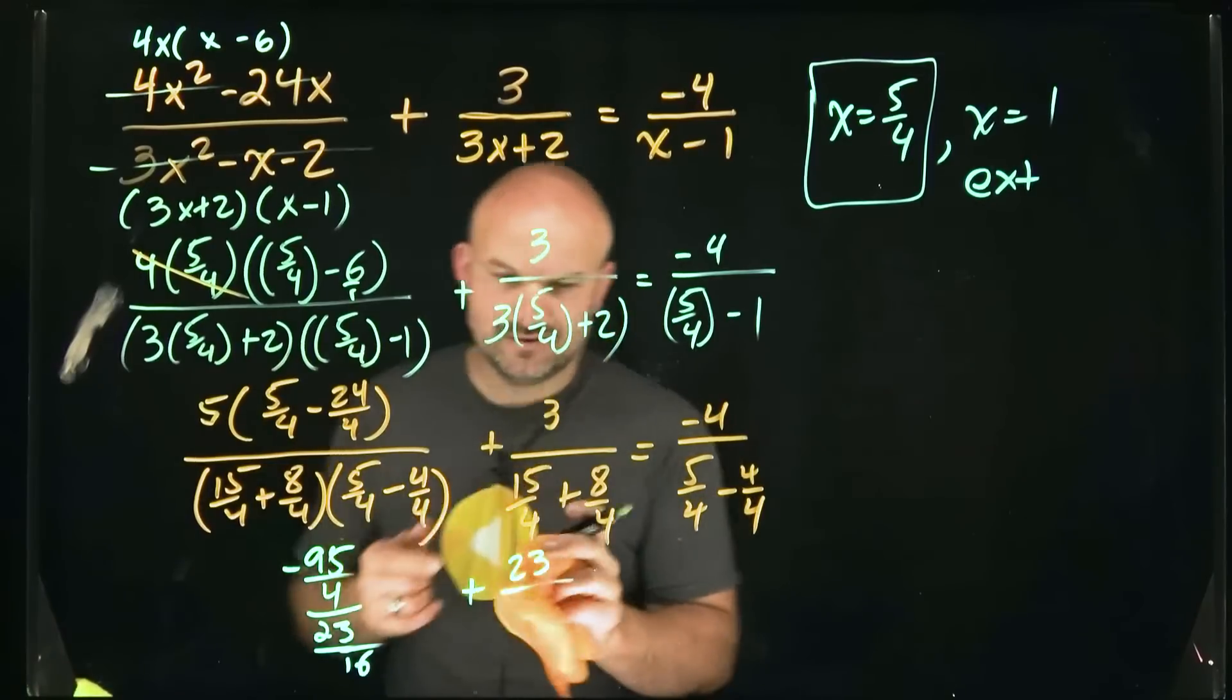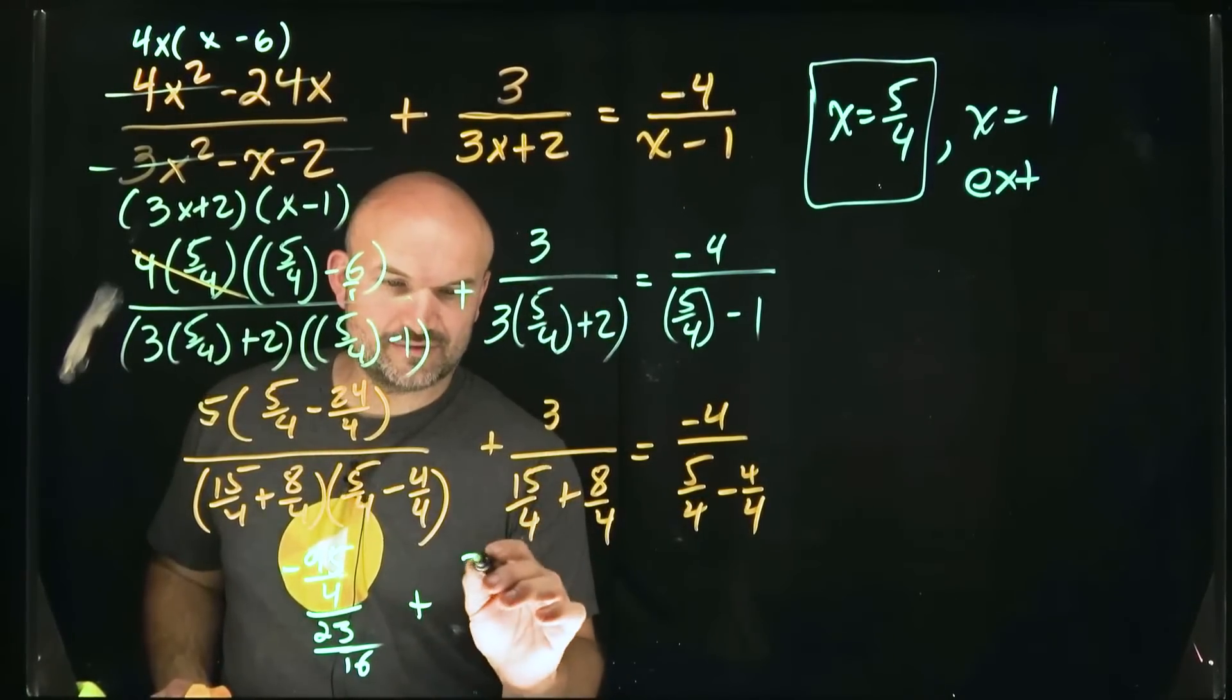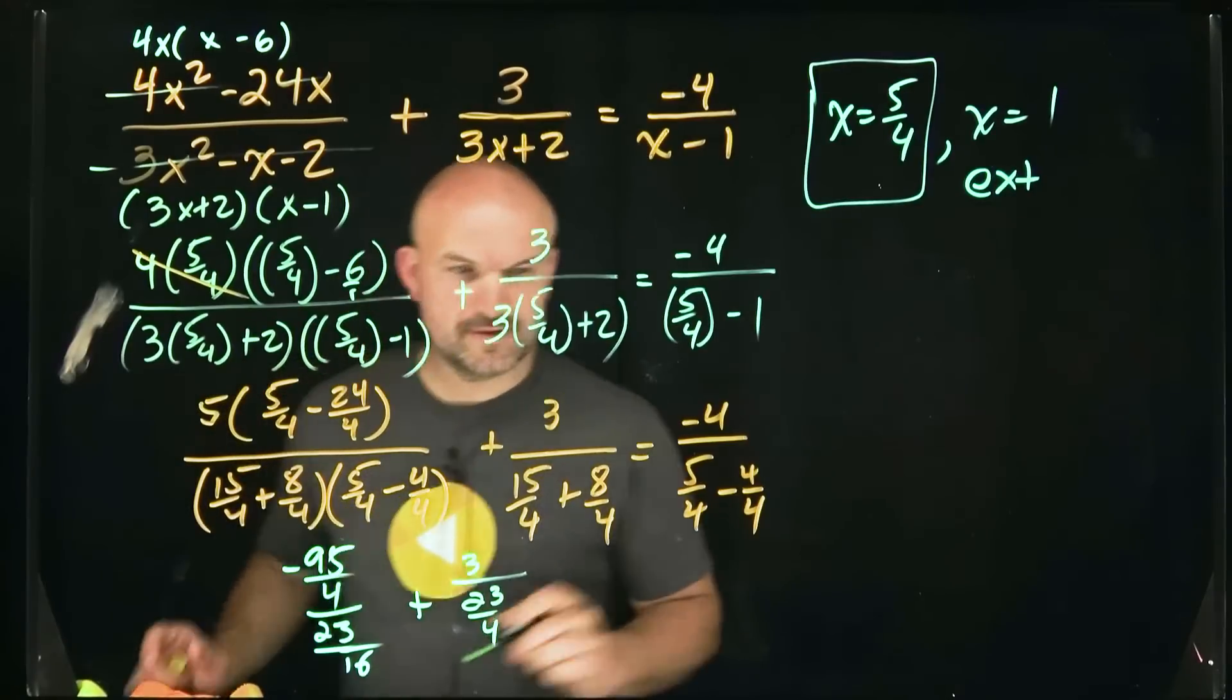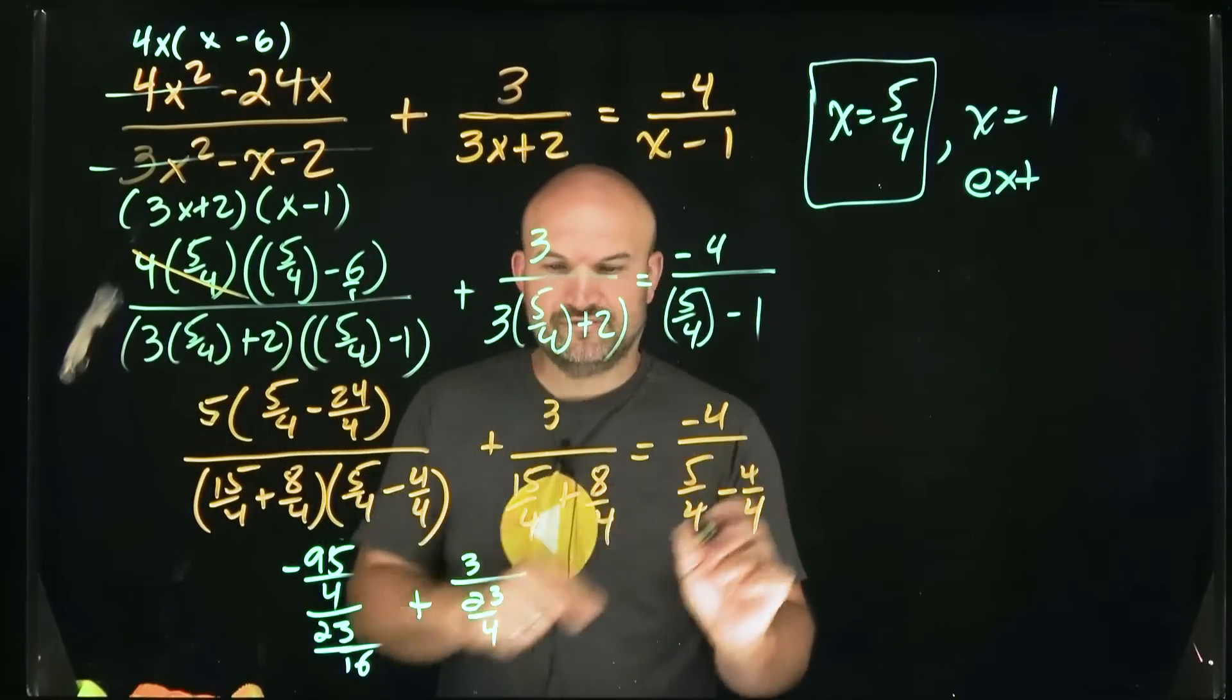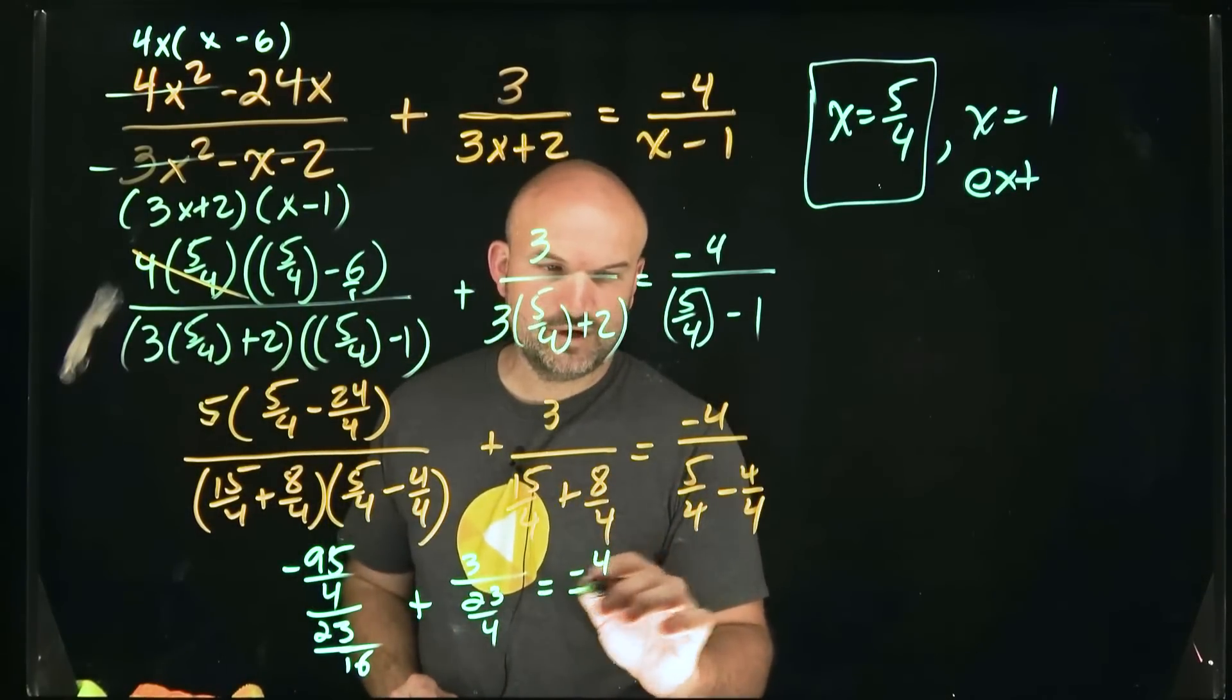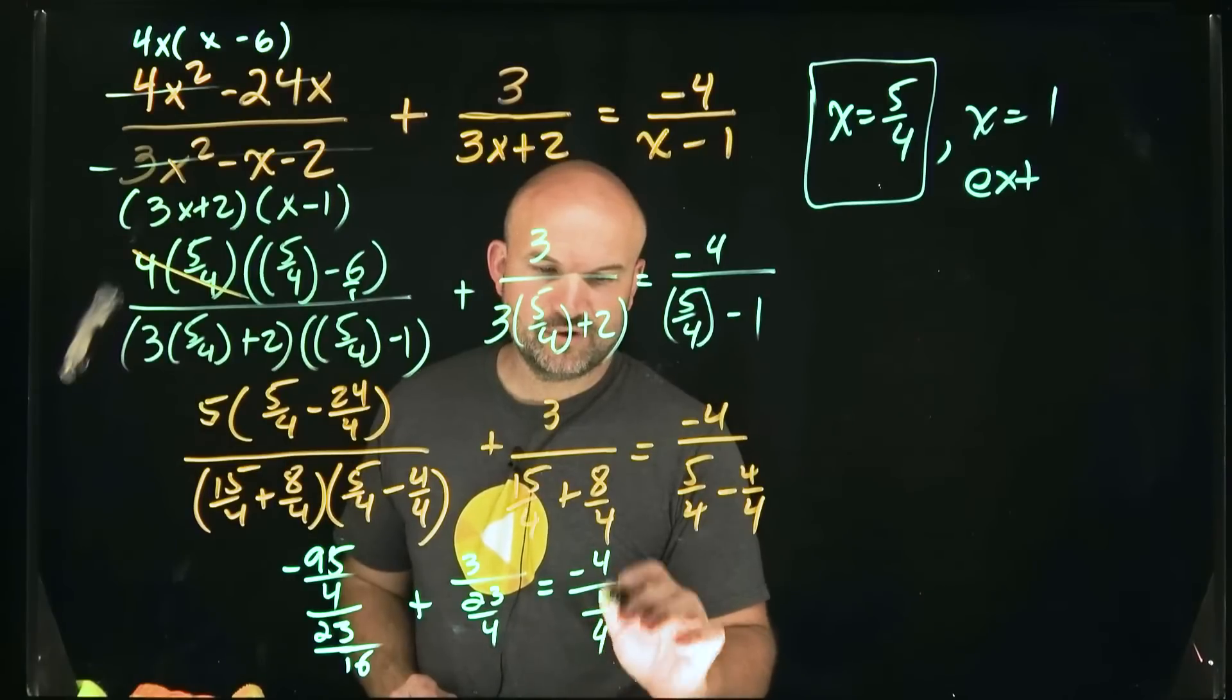Over here, I'm going to have 23 over four. So I'm sorry, that's a three. So that's going to be plus three over 23 fourths. And then over here, that's going to be one fourth. So that's going to be equal to negative four over one fourth.